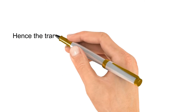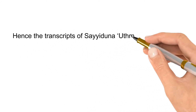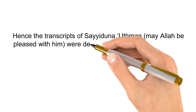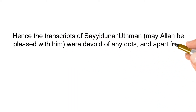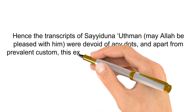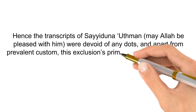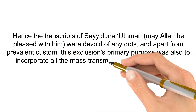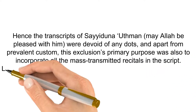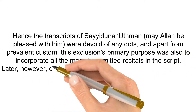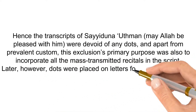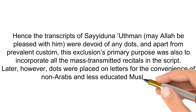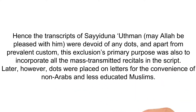Hence, the transcripts of Sayyidina Othman were devoid of any dots, and apart from prevailing custom, this exclusion's primary purpose was also to incorporate all the mass transmitted recitals in the script. Later, however, dots were placed on letters for the convenience of non-Arab and less educated Muslims.